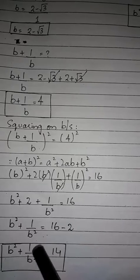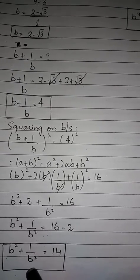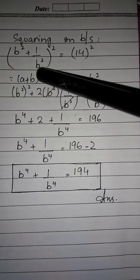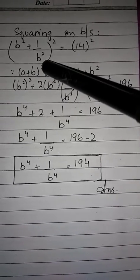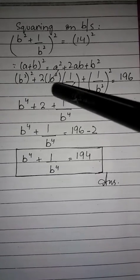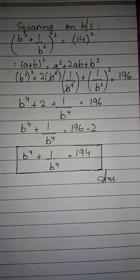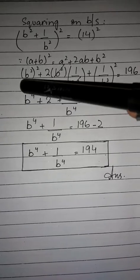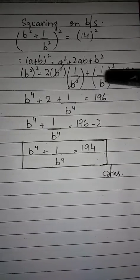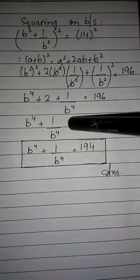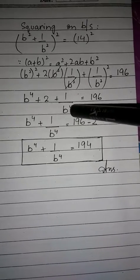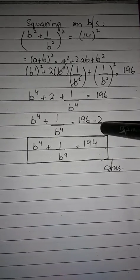But what we need to find is b to the power 4 plus 1 over b to the power 4. So we square again on both sides. (b squared plus 1 over b squared) whole squared equals 14 squared, which is 196. Expanding: b to the power 4 plus 2 plus 1 over b to the power 4 equals 196. So b to the power 4 plus 1 over b to the power 4 equals 196 minus 2, which equals 194.